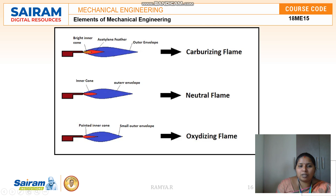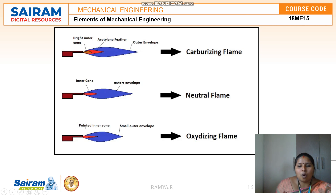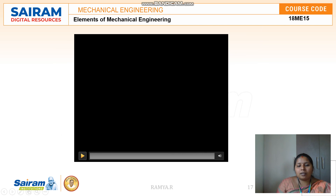During oxyacetylene welding, different types of flames can be obtained depending on the supply of oxygen and acetylene. If acetylene is supplied more, a carburizing flame is obtained. If oxygen is supplied more, an oxidizing flame is obtained. If both are supplied in equal proportions, a neutral flame is obtained.